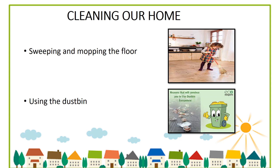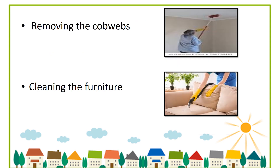We clean our home in many ways. The floor is swept with a broom to remove the dirt. Later it is cleaned using a mop dipped in water, and Lysol or any other insecticide is used to kill the germs present on our floor, and it also removes stains. Next we use a dustbin — the dust and peels must be dropped into the dustbin with a lid to avoid flies and small insects. We should also remove cobwebs, which are found in the corners of rooms and on the lights, and clean them regularly.